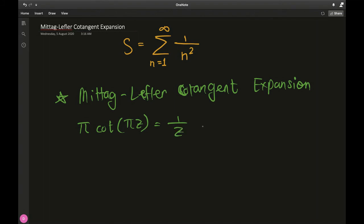But the formula goes like this: π times the cotangent of πz is equal to 1 over z plus 2 times sum from n equals 1 to infinity of z over z squared minus n squared. So if you notice the infinite sum associated with this expansion, it almost almost looks like S, the sum from the Basel problem.